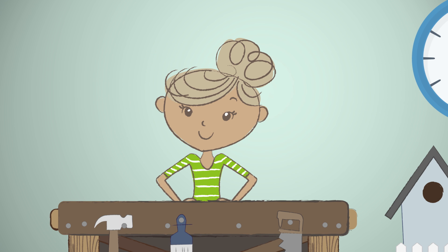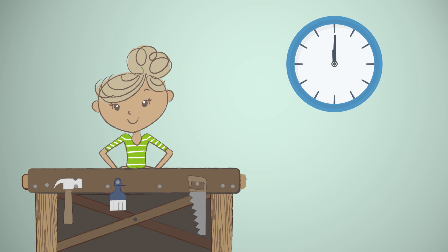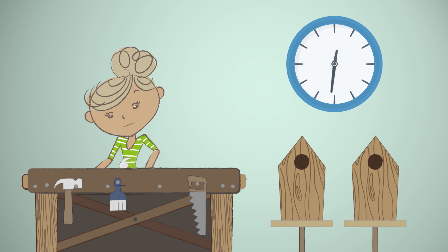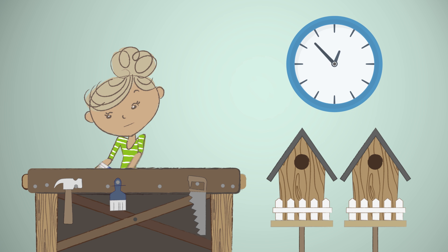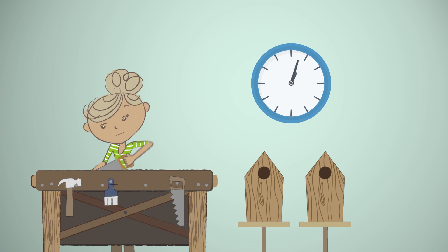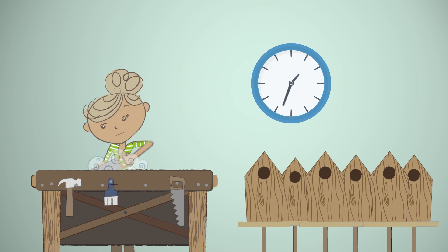With experience, Beth discovers better ways to make her birdhouses. By rearranging her production process, Beth is able to build more birdhouses in the same amount of time. She also develops skills that allow her to complete each step in less time. With these improvements, Beth can now make two birdhouses each hour.